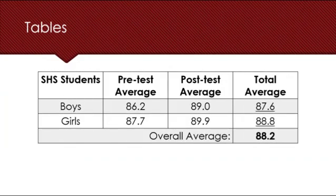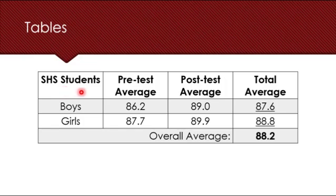The most commonly used is the table. Tables are easy to create, formal, and they look clean. When creating a table, make sure that you have headings and that your headings actually make sense — they should represent what the data is all about. For example, this table has headings: senior high school students, pre-test average, post-test average, total average, and the overall average. Try to arrange the table in a manner that is understandable.